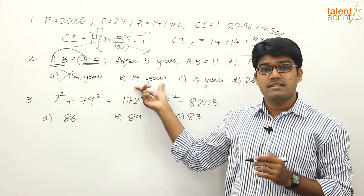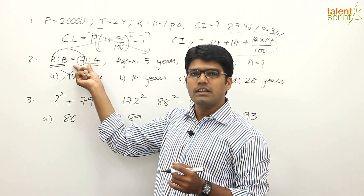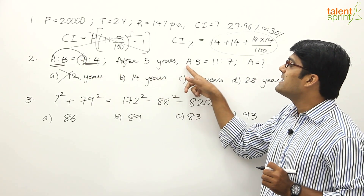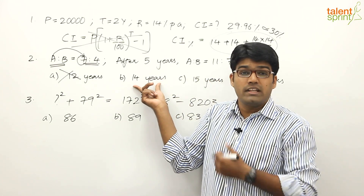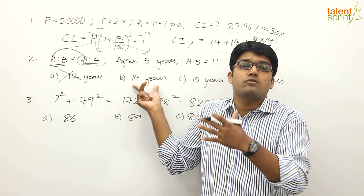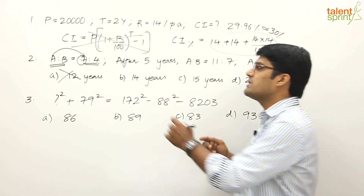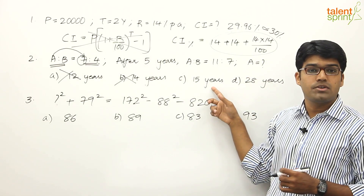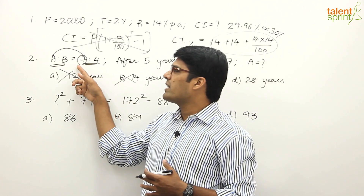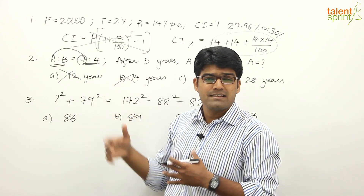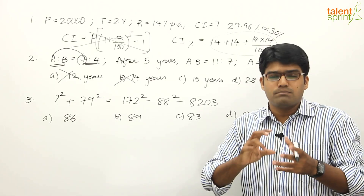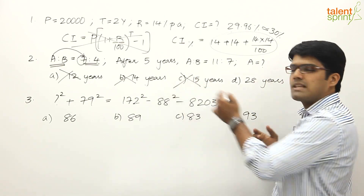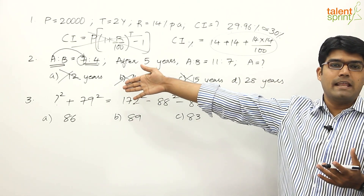Option B is 14 years — a multiple of 7, so the first condition is satisfied. But the second condition says after five years, A's age must be a multiple of 11. If A = 14, then after 5 years A is 19, which is not a multiple of 11, so option B is eliminated. Option C is 15 — not a multiple of 7, so it's also eliminated.